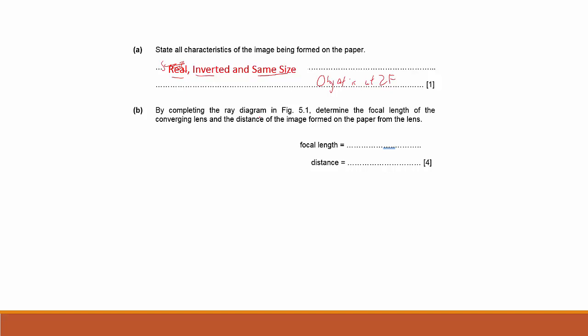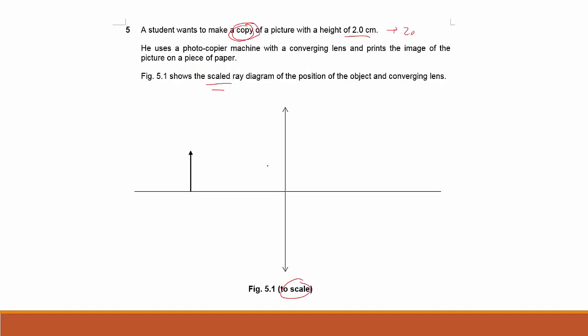The next question asks you to complete the light ray diagram in Figure 5.1 and determine the focal length of the lens. This is the original object. You want to construct a light ray diagram. First, construct a light ray that passes through the center of the lens - it will just go straight. We know that the image will be 2 centimeters, so you just need to find a 2 centimeter line that will fit.